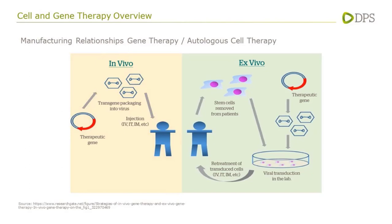With ex vivo cell therapy, the transduction process occurs outside of the body. Blood is drawn from the patient, the particular cells to be modified are separated and refined. Those cells — which in the case of CAR-T are the patient's T cells, part of their immune system — are then transduced with the genetic modification. The modified cells are expanded, and then that becomes the medicine which is injected back into the patient as a personalized medicine.